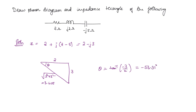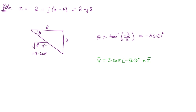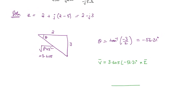The impedance angle θ = tan⁻¹(−3/2) = −56.31°. From V̄ = 3.605∠−56.31° · Ī, the current leads the voltage, because φ_v = −56.31° + φ_i means φ_i is greater than φ_v. So if V̄ is the reference, Ī leads by 56.31°. This is the phasor diagram.